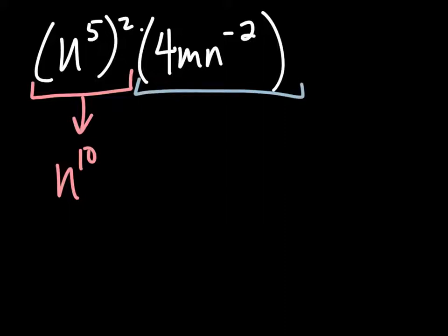The second piece here, and I forgot to write the outside exponent. We should have a cubed up here. It wouldn't be any fun. Without that, we need to apply the power of a product rule.